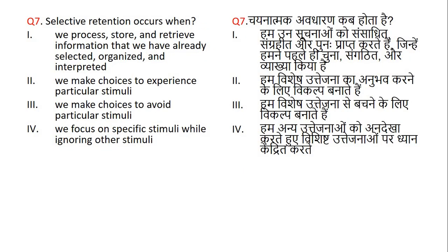Question number 7. Selective retention occurs when? The right answer is 1 — we process, store, and retrieve information that we have already selected, organized, and interpreted. Option 1 is the right answer.